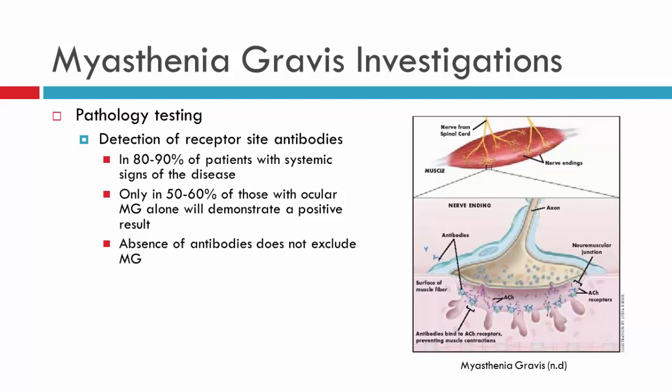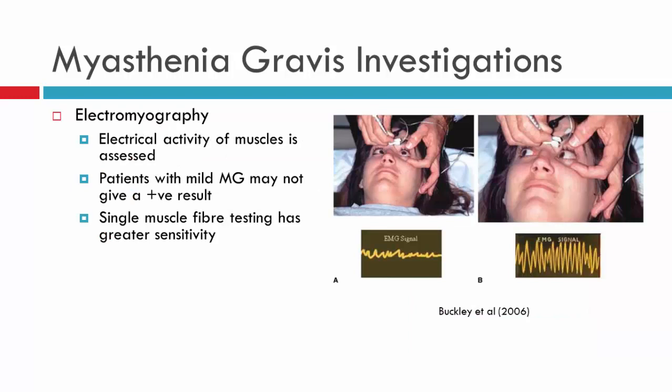We can also test for Myasthenia Gravis through systemic investigations to support the diagnosis. You can do pathology testing, looking for the antibodies related to Myasthenia Gravis — however, not all patients will have these antibodies, so the absence of antibodies does not exclude Myasthenia Gravis. You could also perform electromyography to look at the electrical activity of the extraocular muscles. Some patients with Myasthenia Gravis may not give a positive result, but single muscle fibre electromyography has been shown to be quite sensitive — though it requires experienced hands to perform.